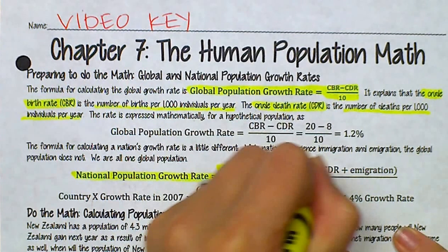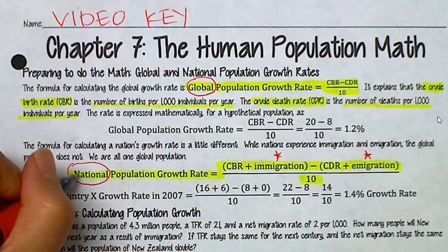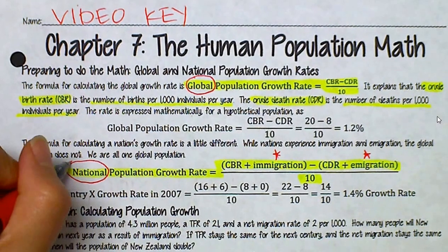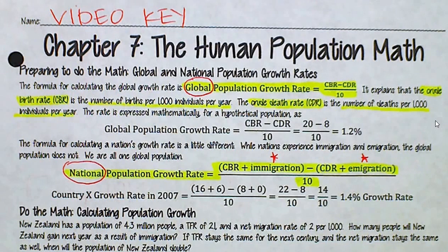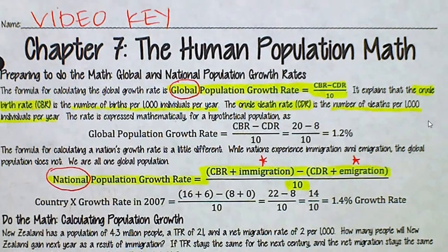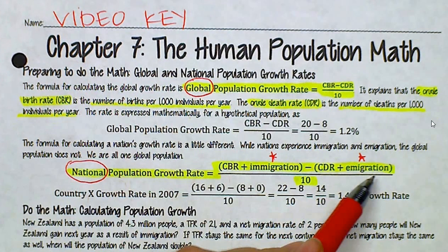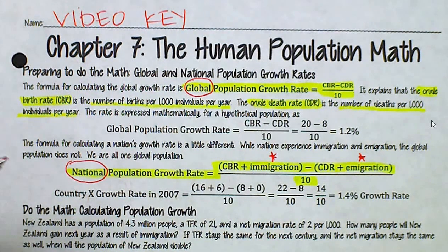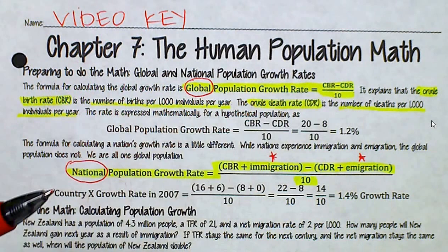A nation is a country, so the national population growth rate refers to a specific country. Global is of course the whole world. So far we don't have immigrants or emigrants of planet Earth, which is why immigration and emigration are not included in the global population growth rate.